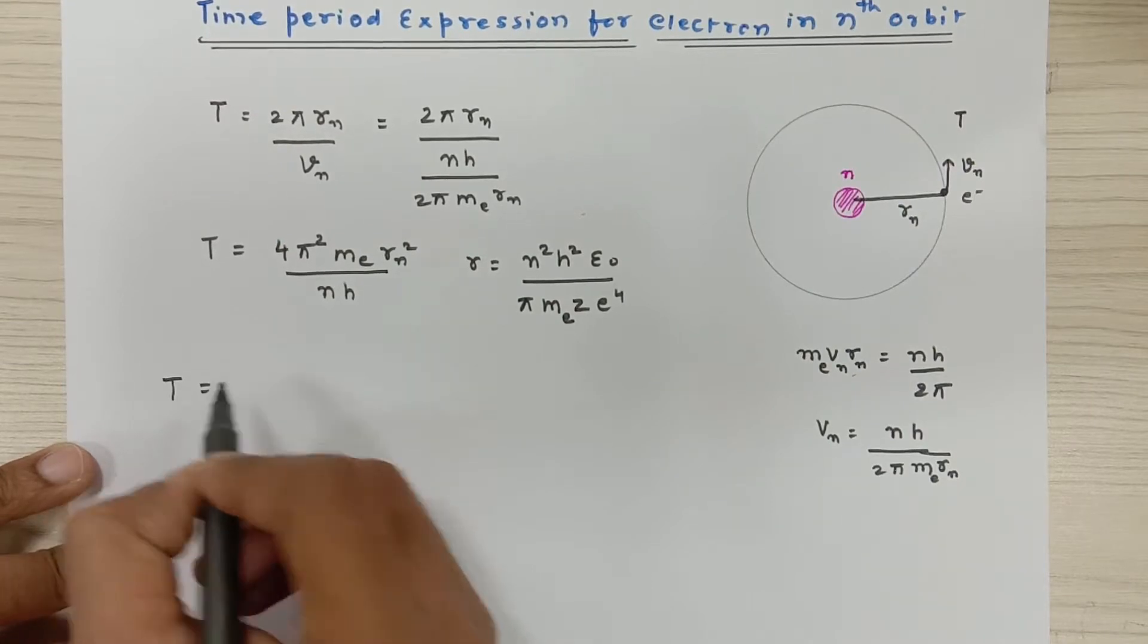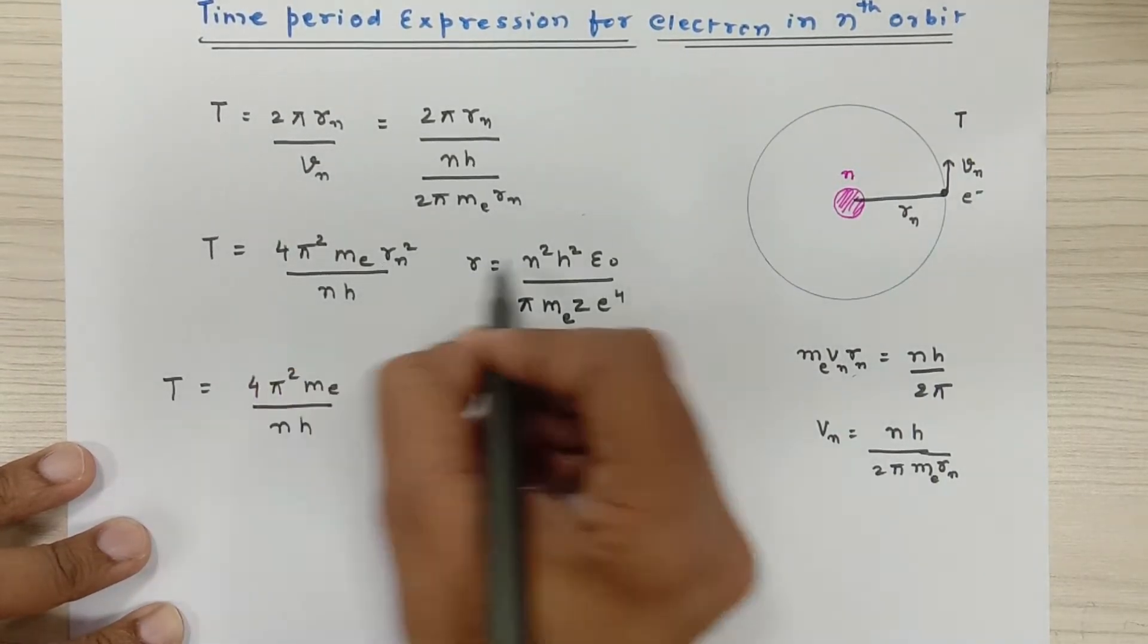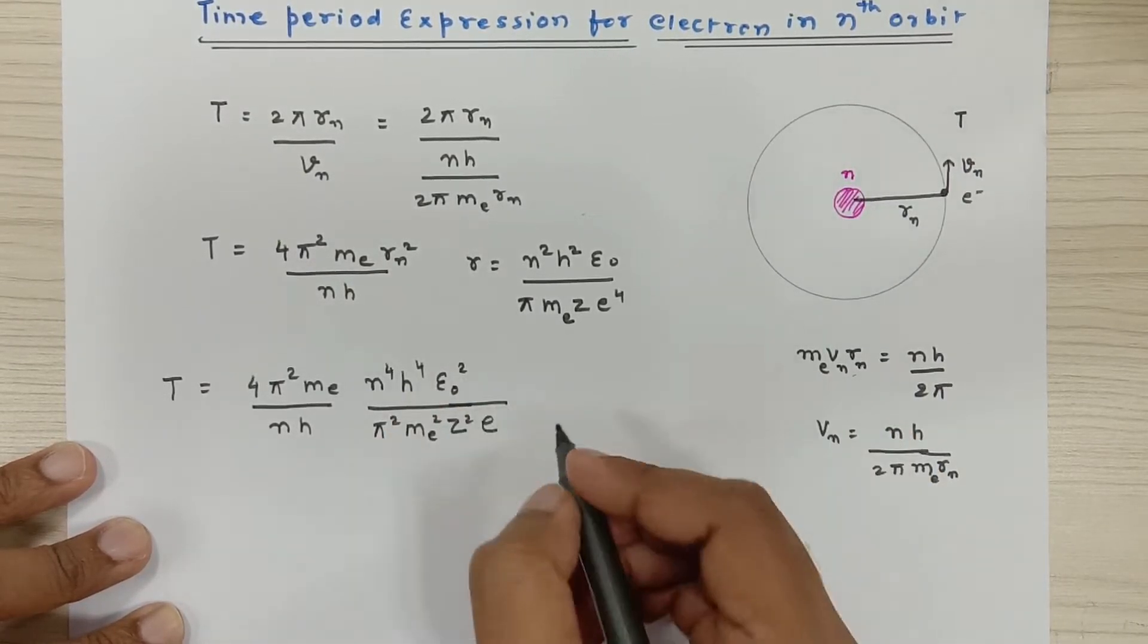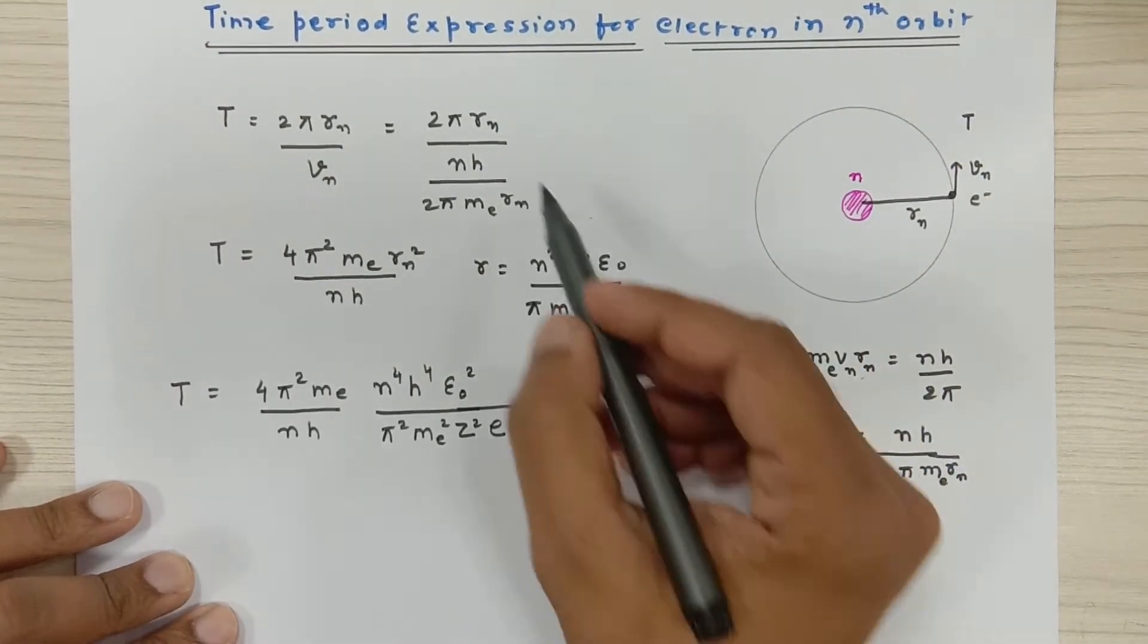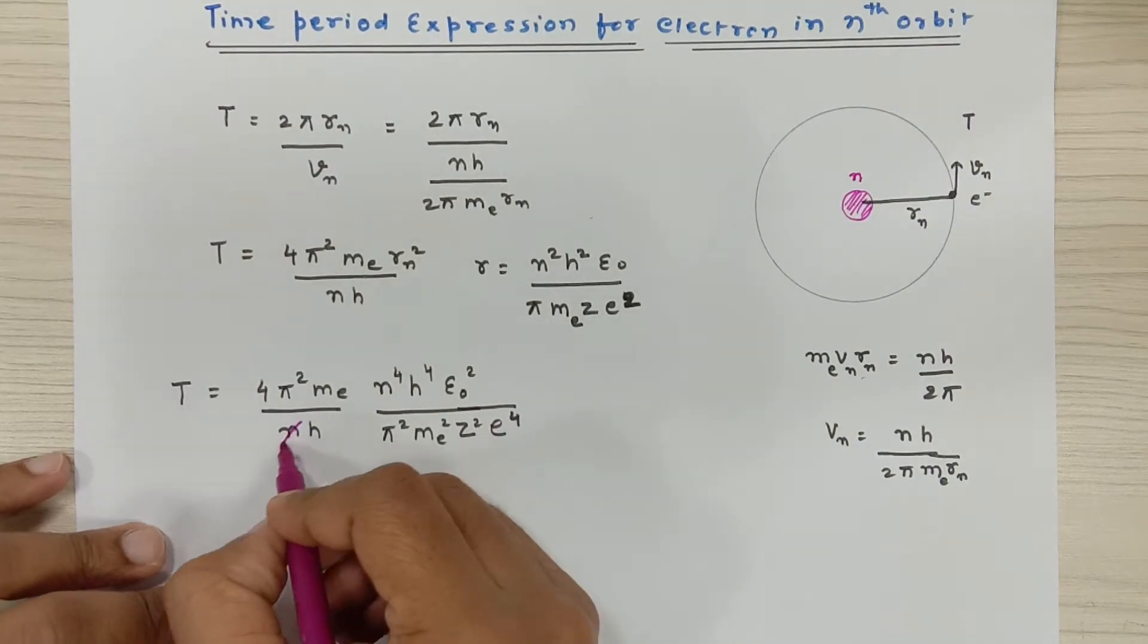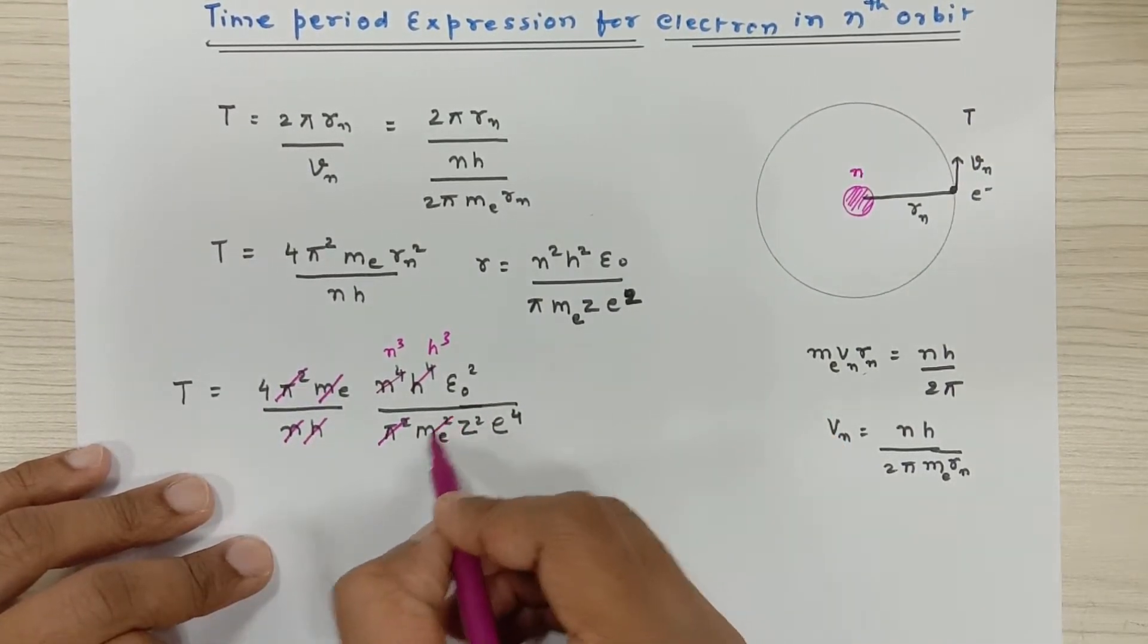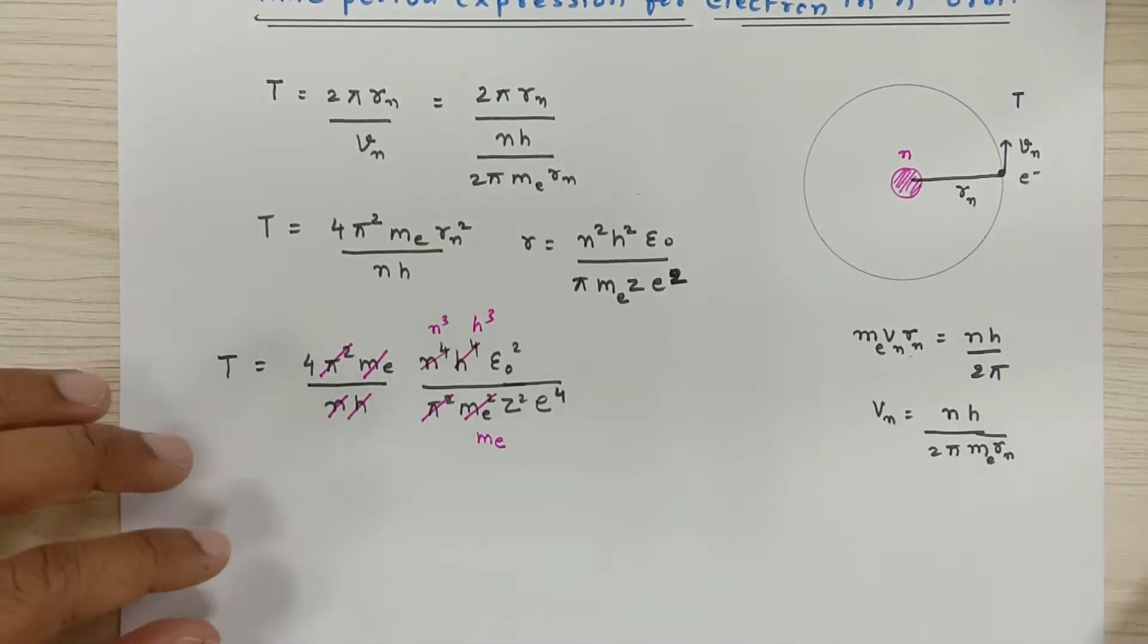Now time period of an electron, that is equal to 4π² – instead of r² I am going to square this one, so this becomes n⁴h⁴ε₀²π²mₑ²z²e⁴. I'm sorry, I made a mistake over here, it is e². So here in this expression it is e², so when I square it up I get e⁴. I am going to find out the identical terms which I can cancel. So 1 n over here, so this becomes n³. Then 1 h over here, so this becomes h³. This π² and π² is getting cancelled. What else? Mass of electron – a single mass of electron remains over here. So now all the necessary cancellation has been done.